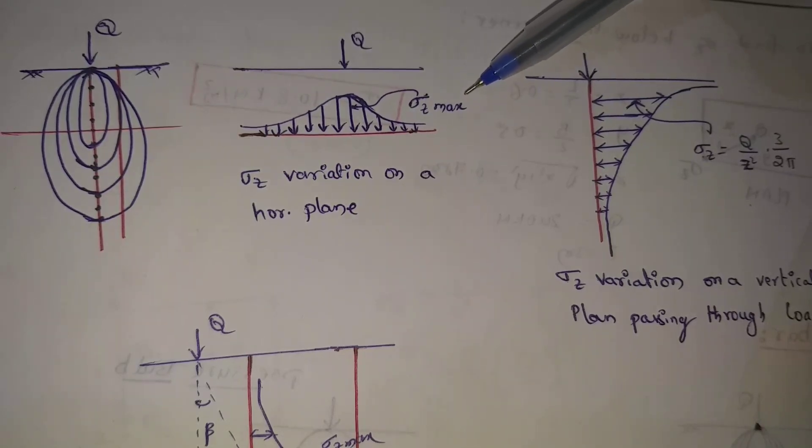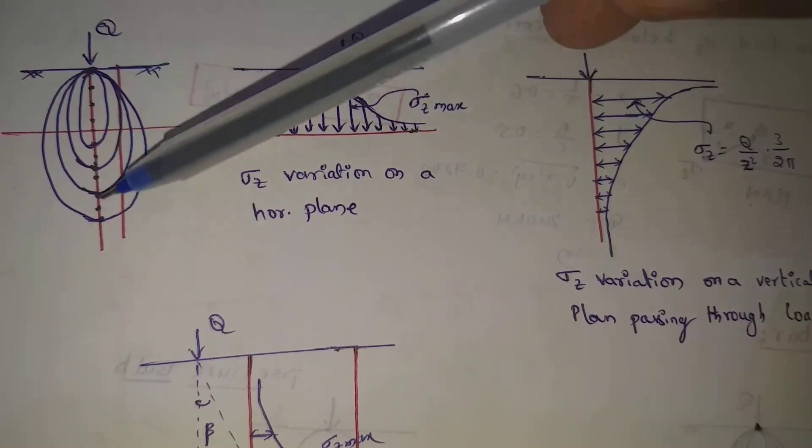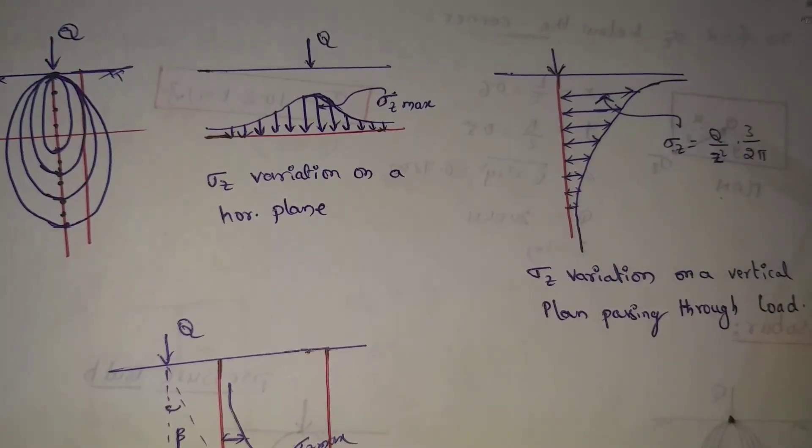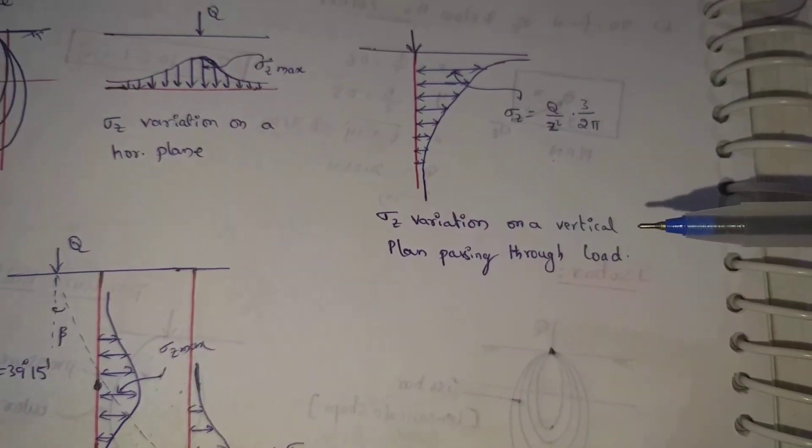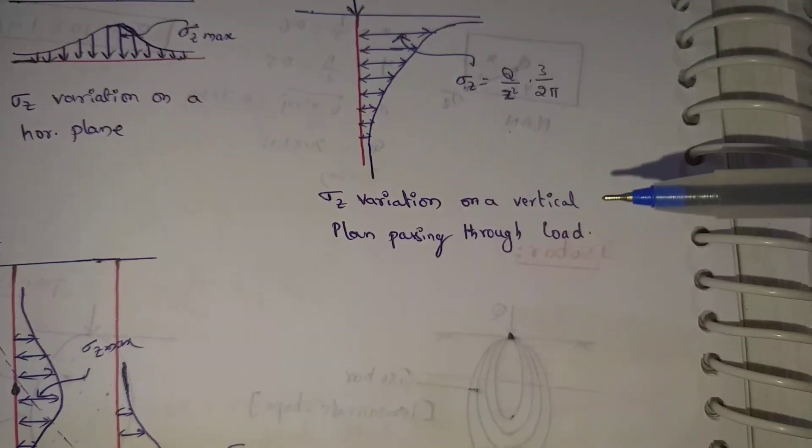Sigma Z maximum, horizontal plane. Otherwise, vertical section. In this vertical section, diagram is this. Sigma Z variation and vertical plane passing through load.